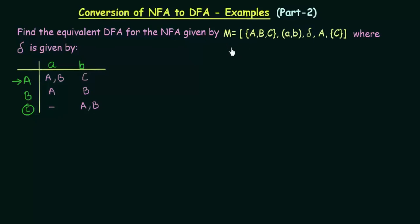In the previous lectures, I have already taught you how an NFA is formally defined using 5-tuples. The first element, {A, B, C}, are the states — we have 3 states. The second tuple is the inputs, which are A and B. Then we have a transition function δ, and A is the starting or initial state, while C is the final or accepting state.